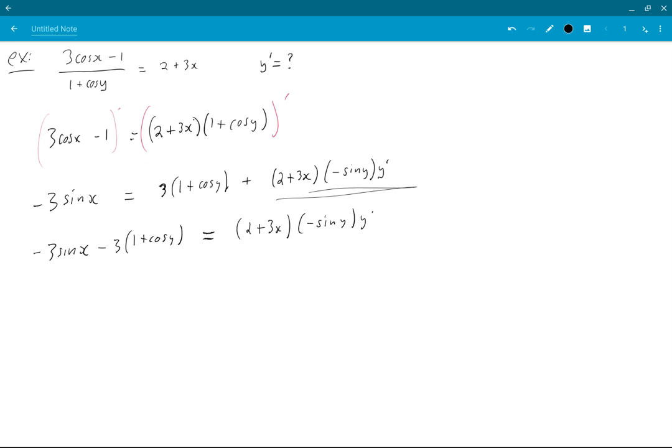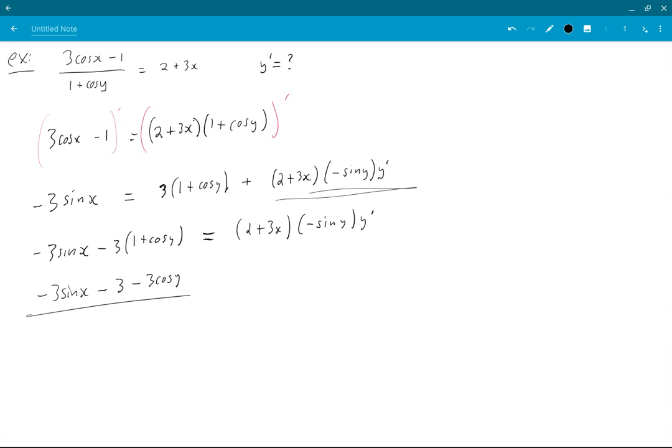And then solving for y prime. I get minus 3 sin x minus 3 cos y, all divided by 2 plus 3x minus sin y is y prime.